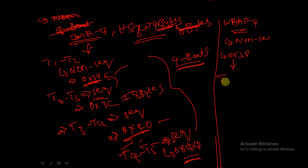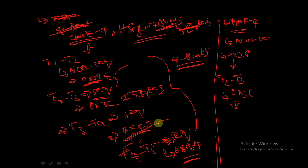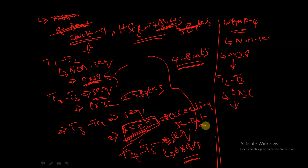In the next clock cycle T2 to T3, the address will increment to 0x3C. In the next clock cycle, the address will not go to 0x40 since it is exceeding the 32-bit address boundary. So it will wrap around back to 0x30 and increment to 0x34.